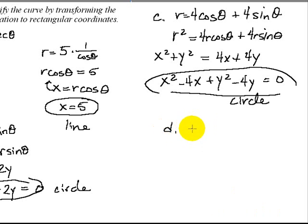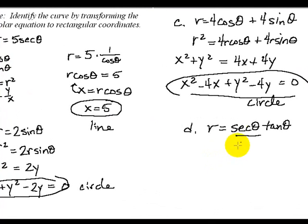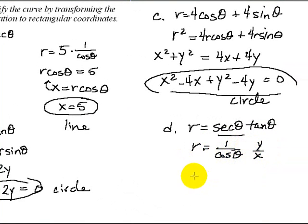All right, part D. Let's look at R equals the secant of θ times the tangent of θ. All right, so one of the things that I notice here is secant of θ is not real useful to me. There's no secant of θ in my four rules, so I'm going to rewrite it as 1 over cosine of θ. Now tangent of θ, that can be replaced with Y over X, so that's useful to me. And then I can always move the cosine over to the other side. So we have R cosine θ equals Y over X, which would mean that X equals Y over X.